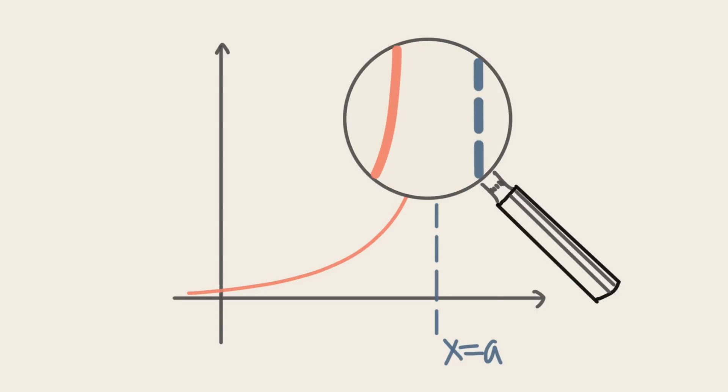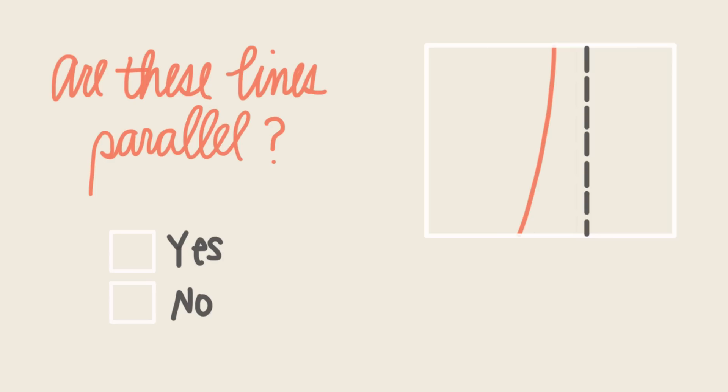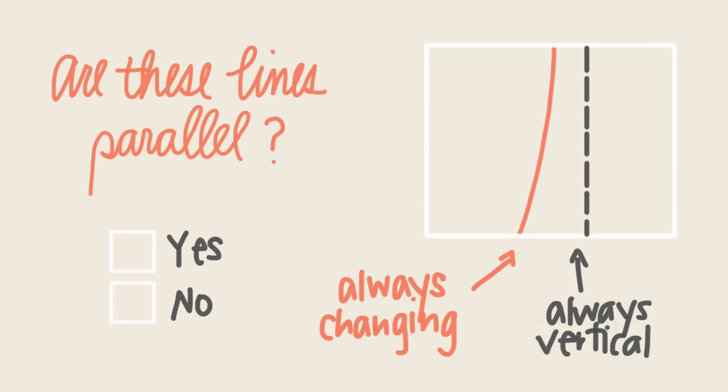Even if we zoom in thousands of times, you'll find that the two lines will never actually touch. Because they never touch, you may be imagining that the two lines are somehow parallel, but in order to be parallel, these lines would need to have exactly the same slope. The slope of the asymptote though is completely vertical, and the slope of the function is constantly changing. So the lines are definitely not parallel, but instead just infinitely close together.